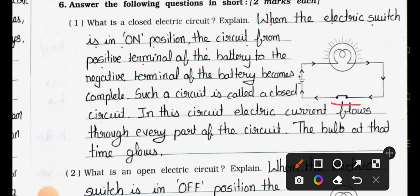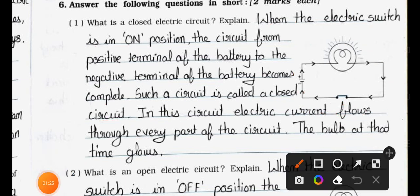Answer: When the electric switch is in the on position, the circuit from the positive terminal of the battery to the negative terminal of the battery becomes complete. Current flows through such a circuit, and it is called a closed circuit. In this circuit, electric current flows through every part of the circuit and the bulb glows.